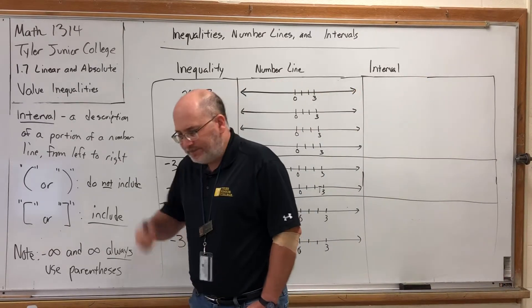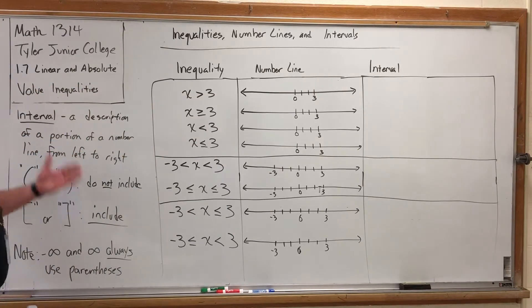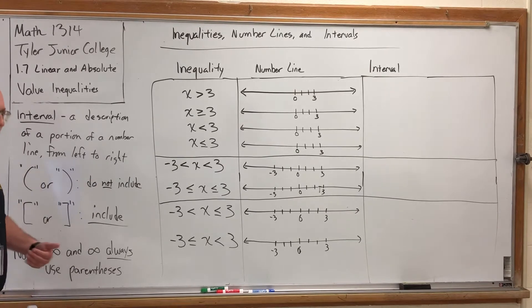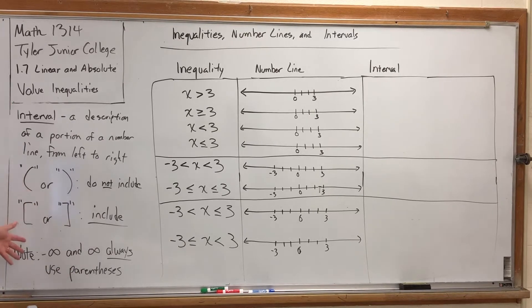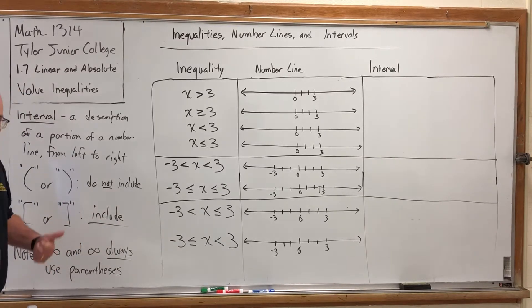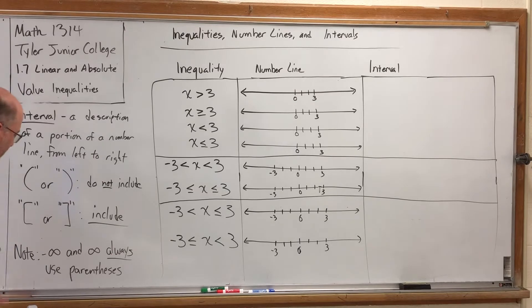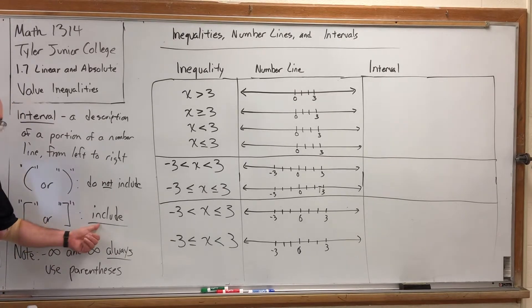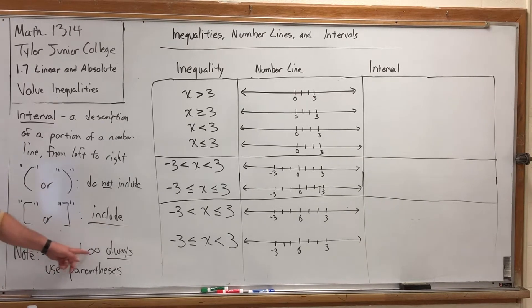What do I mean by an interval? Loosely speaking, an interval is a description of a portion of a number line from left to right — you always describe it from left to right. We will be using two different symbols to surround our interval: parentheses or brackets. We use parentheses when we do not want to include the number on the end of the interval, and brackets when we do want to include it. Negative infinity and positive infinity will always use parentheses.